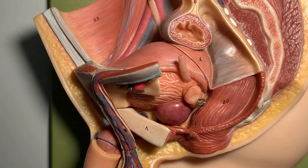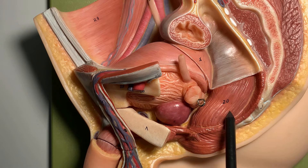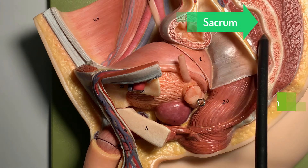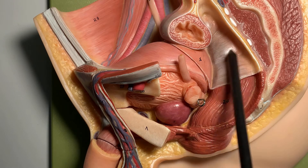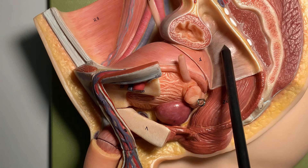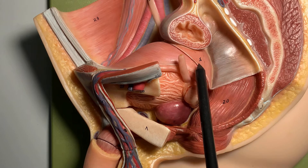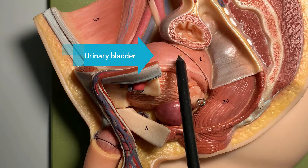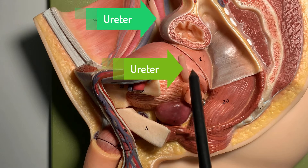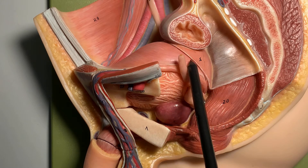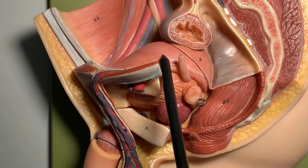Now we are looking at the organization of the urinary bladder, prostate and rectum — how they are closely associated with each other in this model. The most posterior structure is the rectum, which is present in front of the sacrum, and then you can see this peritoneum which is covering it. You can see in front of it the urinary bladder, and this tubular structure going downwards is the ureter. You can see it appears shiny and rough because this part is covered by the peritoneum.